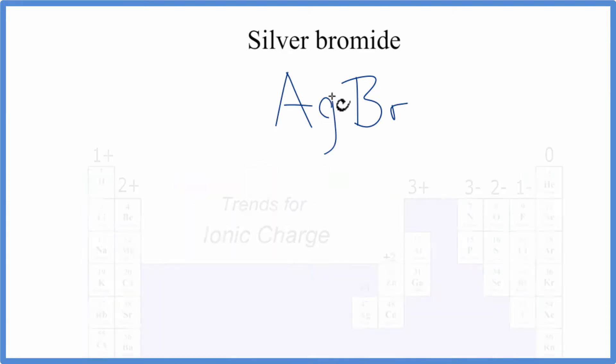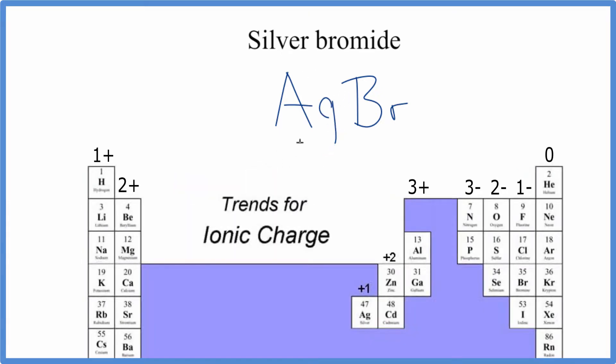So back to the periodic table, silver's a transition metal, and transition metals normally have variable charges. But silver, it's kind of special. It's always one plus. Bromine, that's one minus.